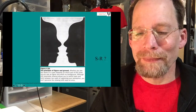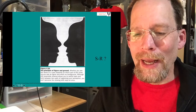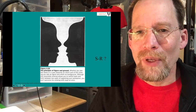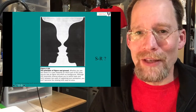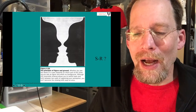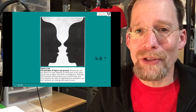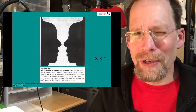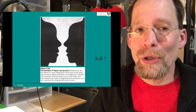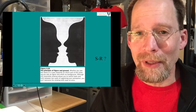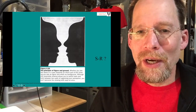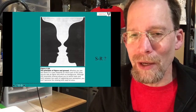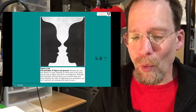Here's the classic vase or profiles illusion. If you can switch back and forth and see two somewhat meaningful visual experiences — the vase and silhouettes in profile — this is very hard to explain using an SR approach. It's very difficult for the strict SR approach to explain two distinct experiences from one stimulus. The strict SR version of behaviorism says one stimulus produces one response. Well, here there's one stimulus — this pattern of black and white — but there could be more than one response.